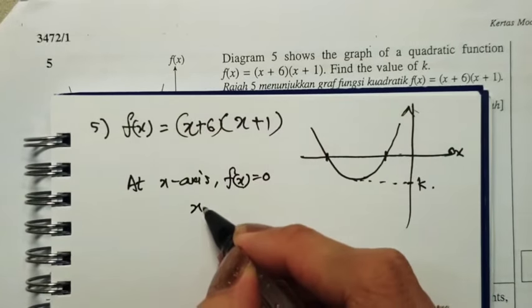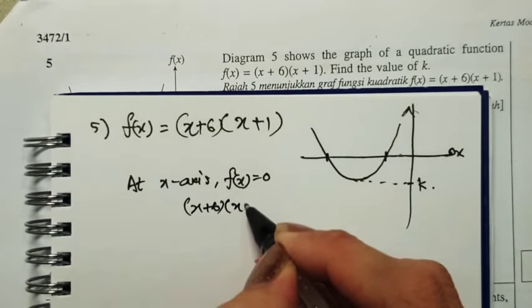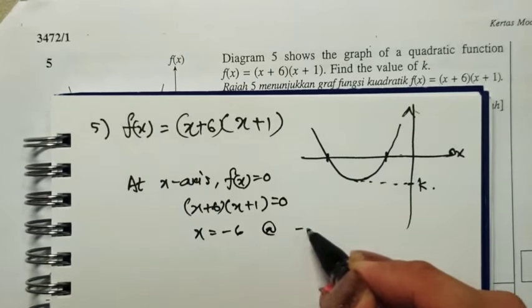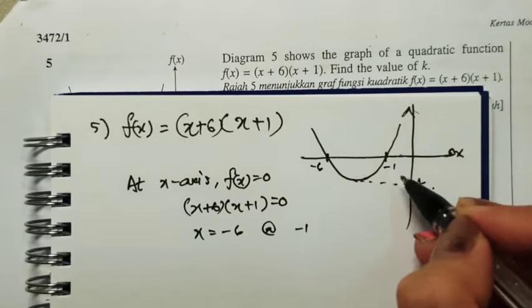y equals 0. So this whole thing, (x+6)(x+1) equals 0. Therefore, x can be negative 6 or negative 1. So this is negative 6 and this is negative 1.